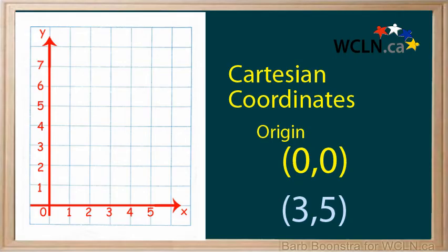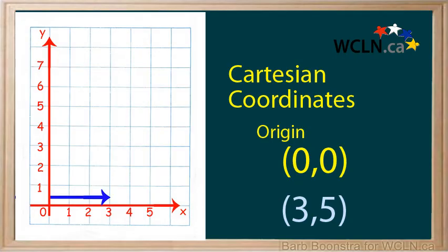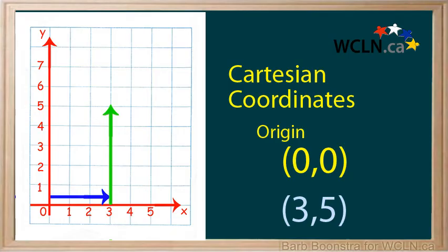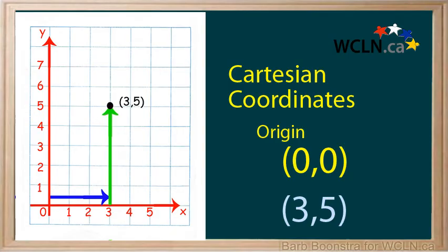To graph the point (3, 5), you would count three units horizontally and five units vertically.